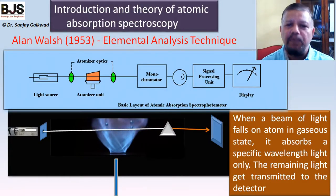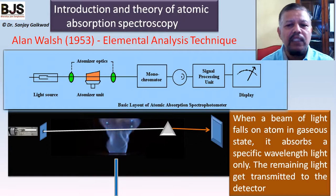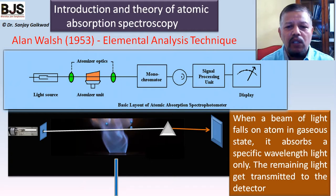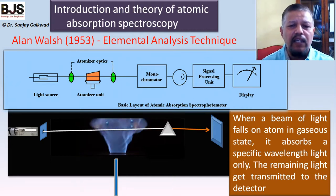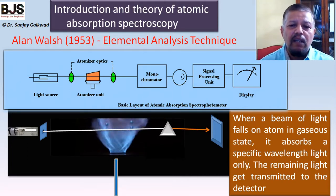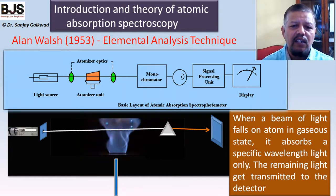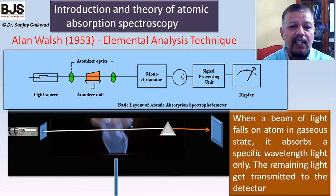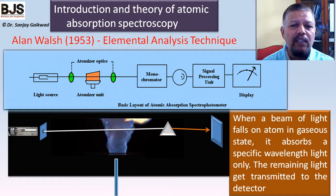This method was discovered by Alan Walsh in 1953. He worked on determination of elemental analysis in solutions. He discovered that when a molecule or atom goes to a higher energy level, it has a tendency to absorb radiation at a specific wavelength. When heated in a flame or electrically heated, the atom goes to the excited state, where it absorbs radiation at the same frequency or wavelength, and the remaining light is transmitted to the detector.